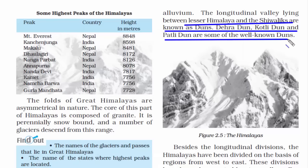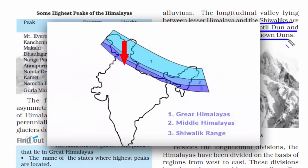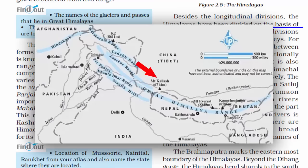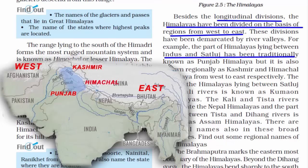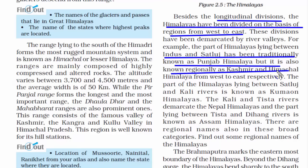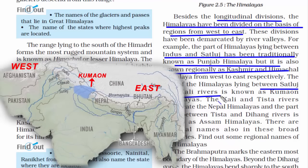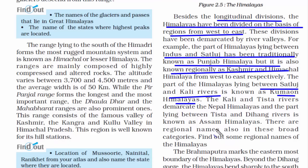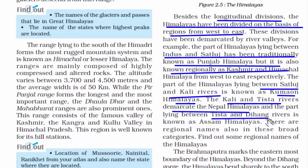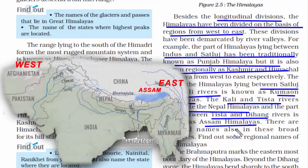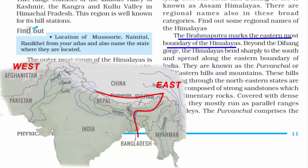Having understood the Himalayas from north to south, we now look at the longitudinal divisions from west to east. The extreme northwest, lying between the Indus and Sutlej rivers, is called the Punjab Himalaya — also regionally known as the Kashmir and Himachal Himalaya. Between the Sutlej and Kali rivers lies the Kumaon Himalayas. Further east, the Kali and Tista rivers demarcate the Nepal Himalayas, and between the Tista and Dihang rivers lies the Assam Himalayas. The Brahmaputra river comes from the easternmost boundary of the Himalayas, and on the eastern side the Himalayas bend sharply to the south.